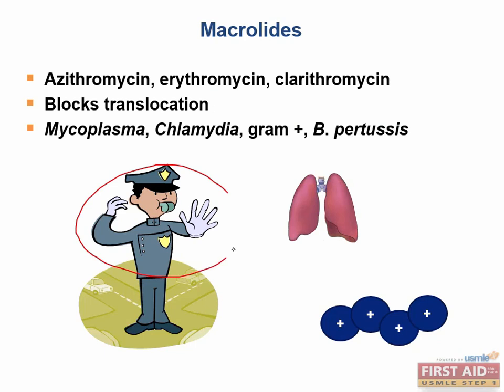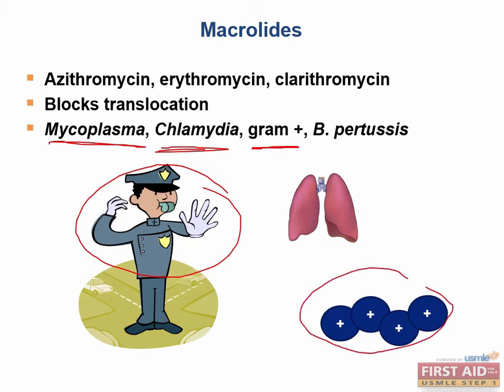These drugs are bacteriostatic and are used against atypical organisms similar to the tetracyclines, including mycoplasma pneumoniae and chlamydiae. In addition, they are also used to treat gram-positive cocci as well as Bordetella pertussis.